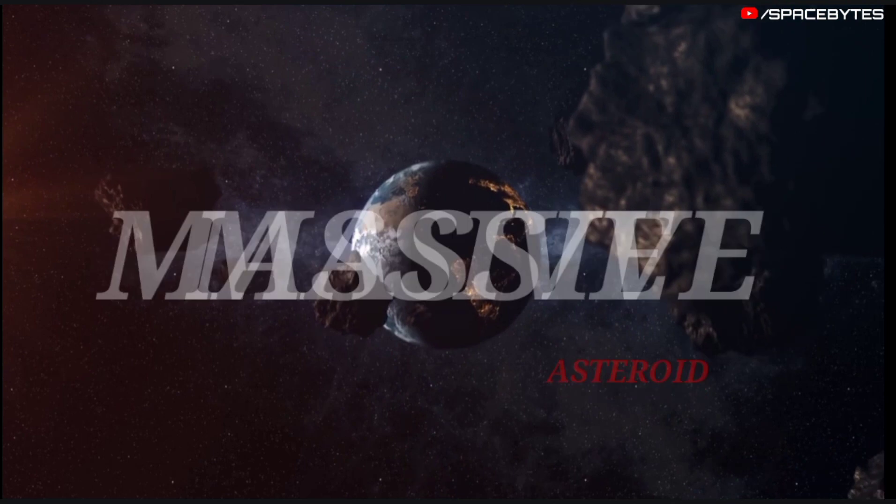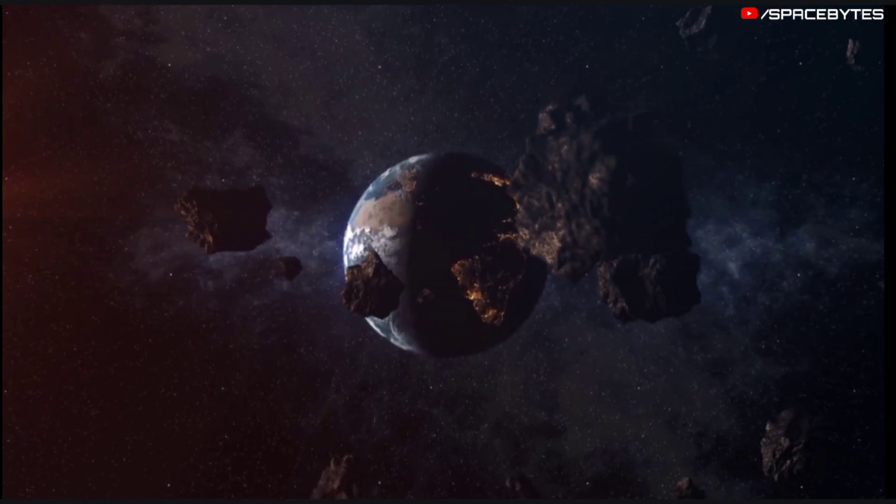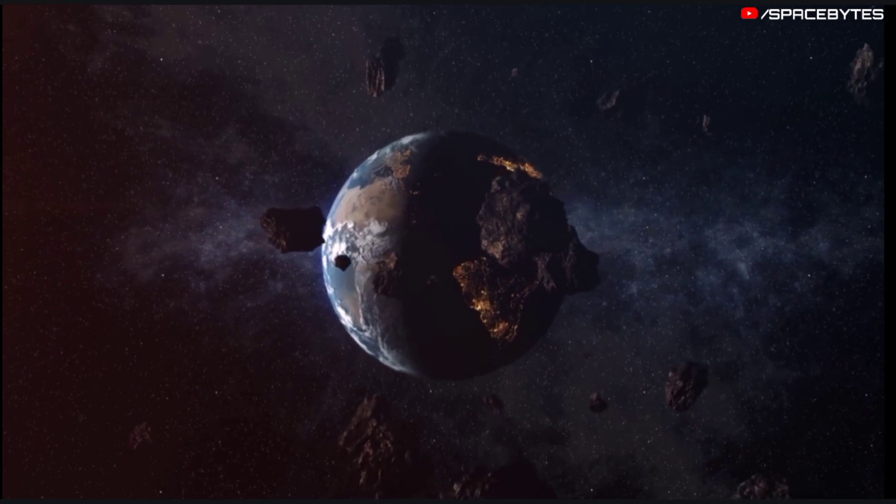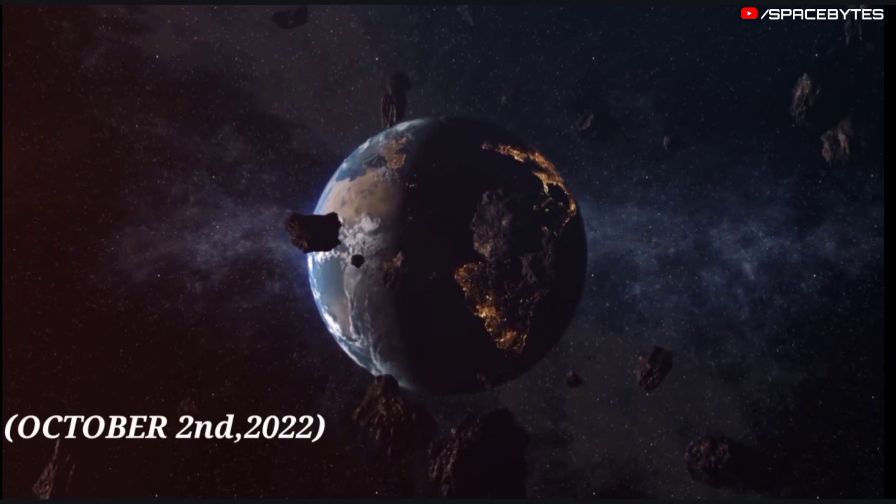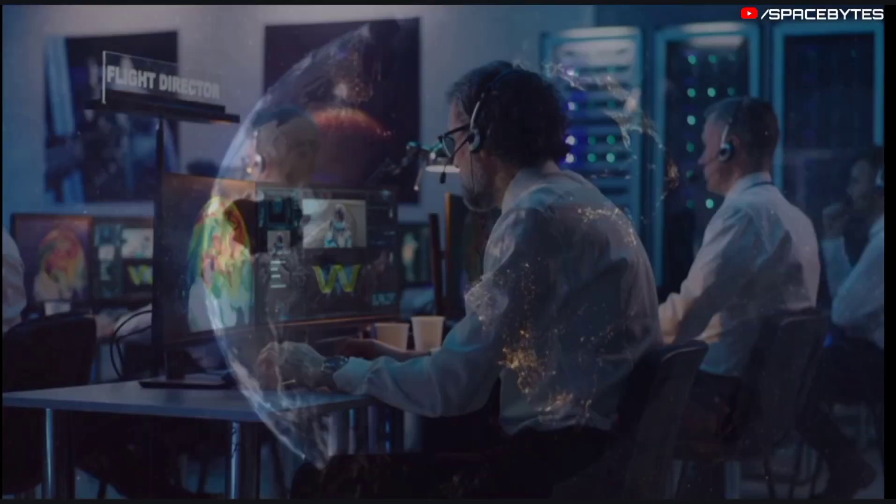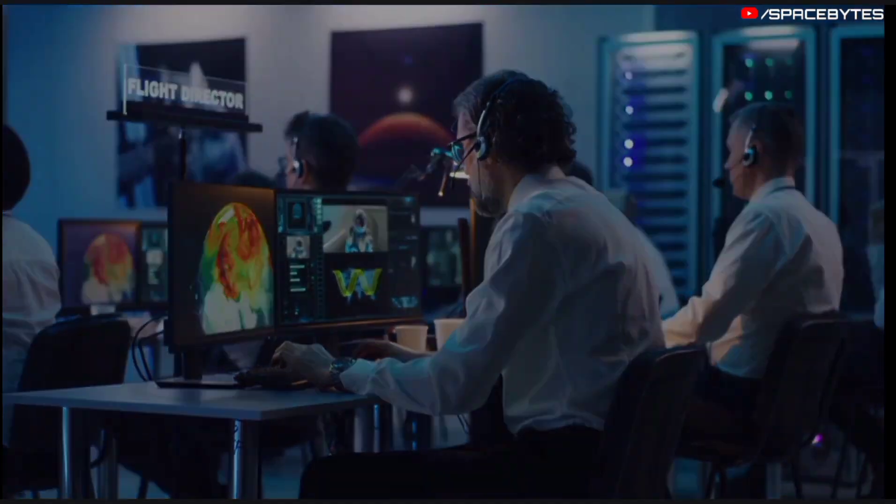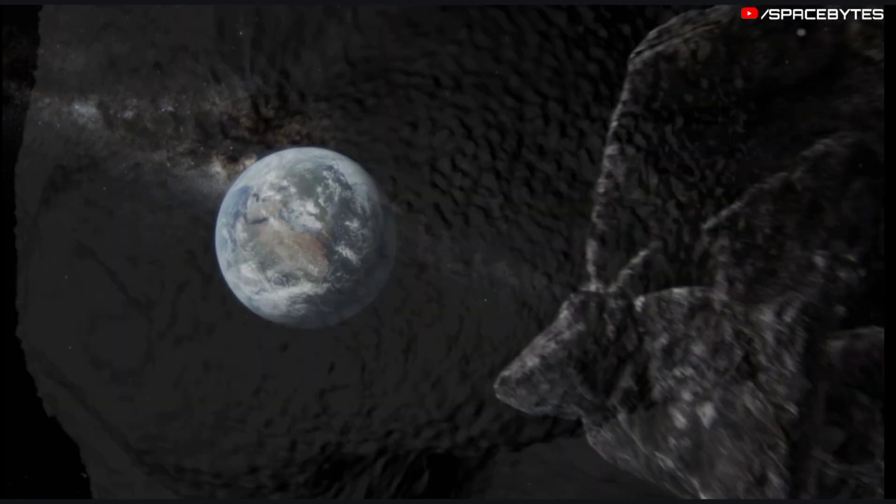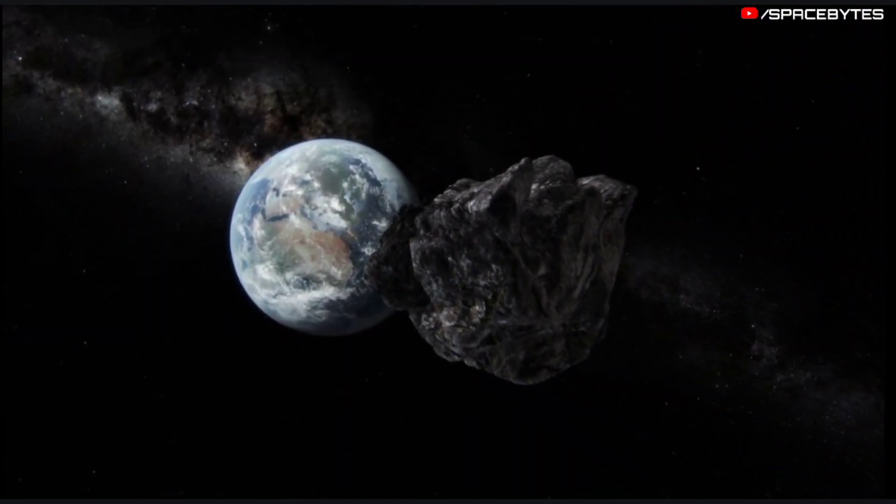According to NASA, a massive asteroid is moving towards the Earth at a very high speed and is expected to make its closest approach to the planet on October 2, 2022. The organization has now given the red flag to asteroid 2022 SB9 as it heads for a close approach to the planet.